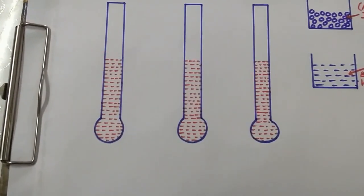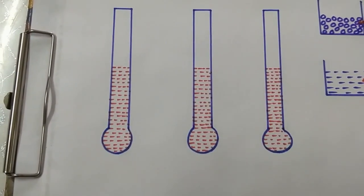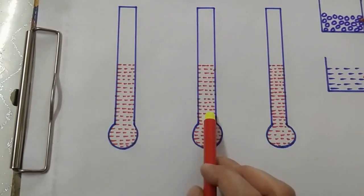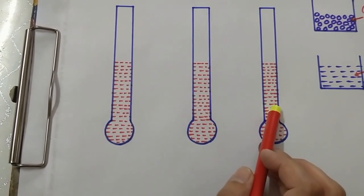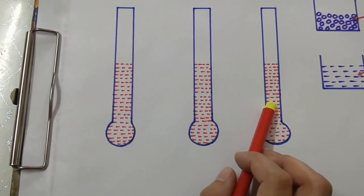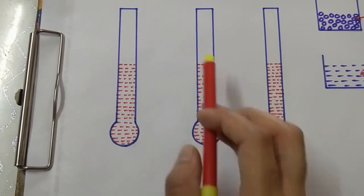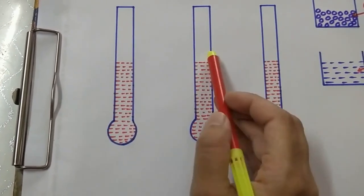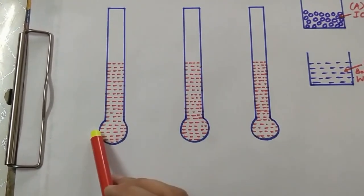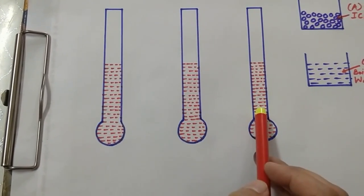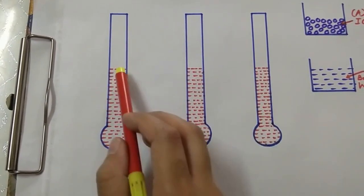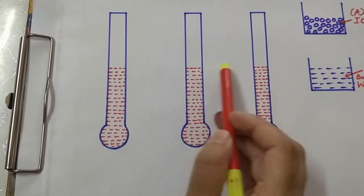As we can see here we have three glass tubes. All these three glass tubes are identical to each other — that means they have the same height, the same width, and the same volume. These three glass tubes are filled with liquid mercury up to the same level.